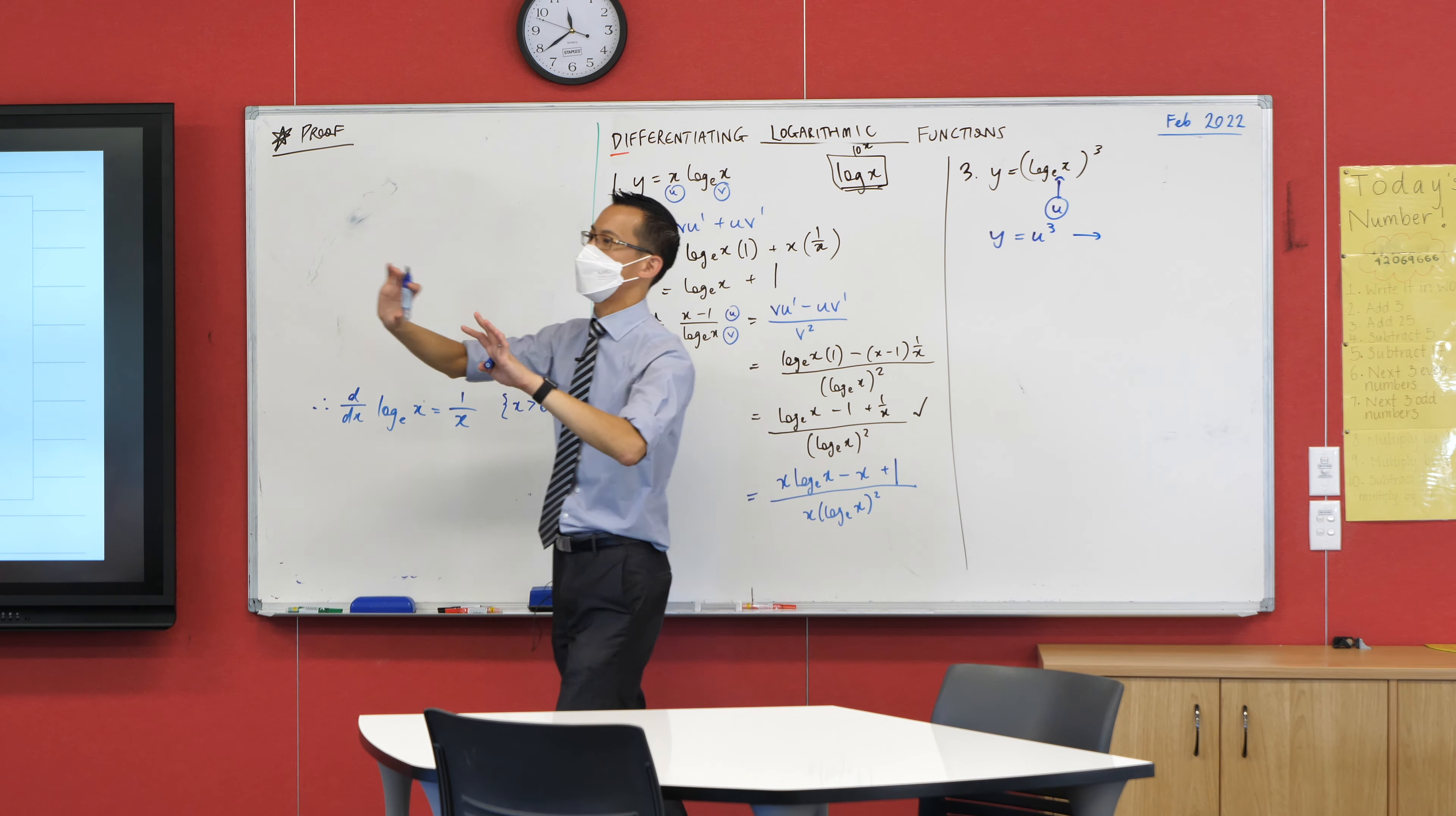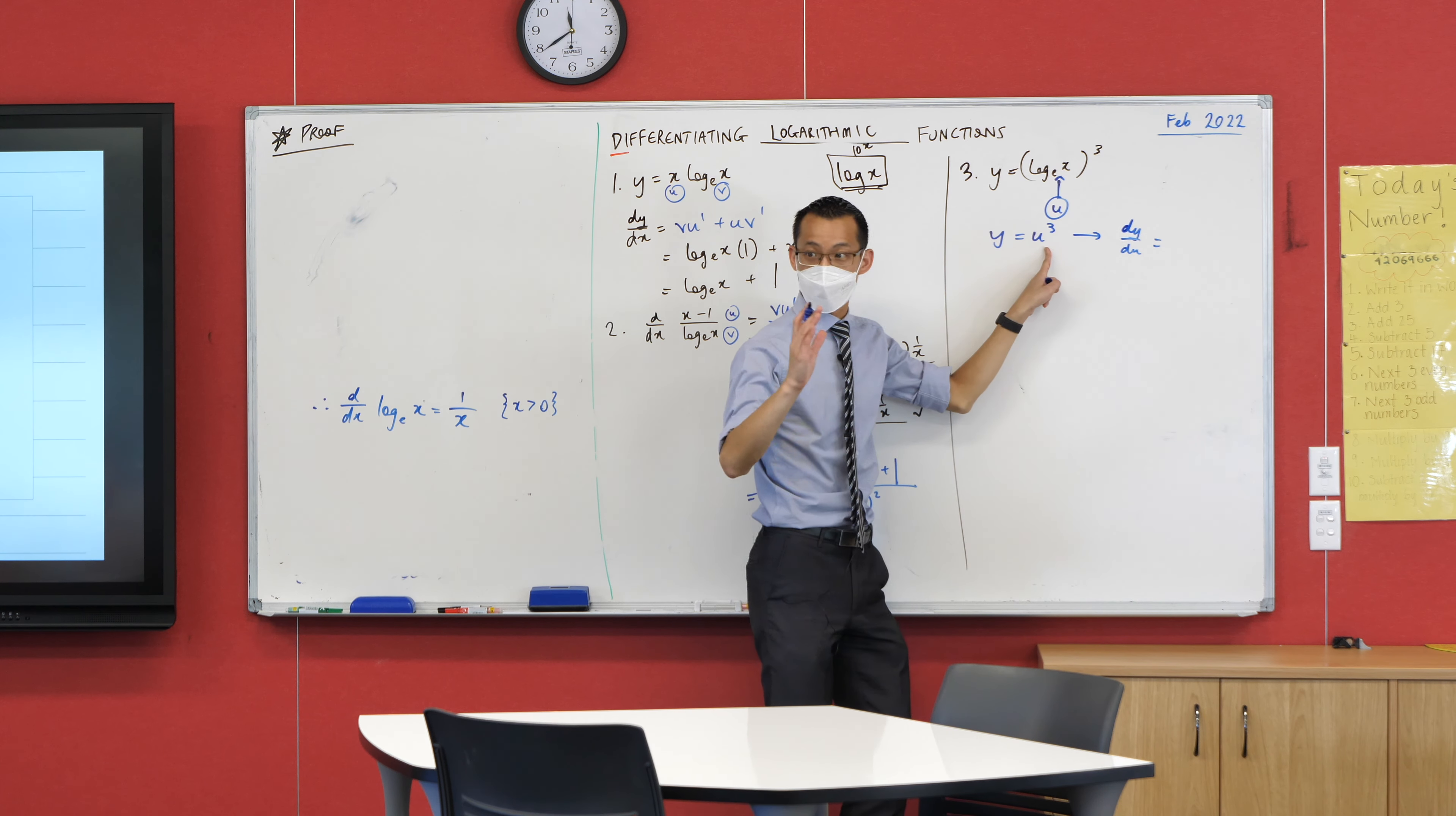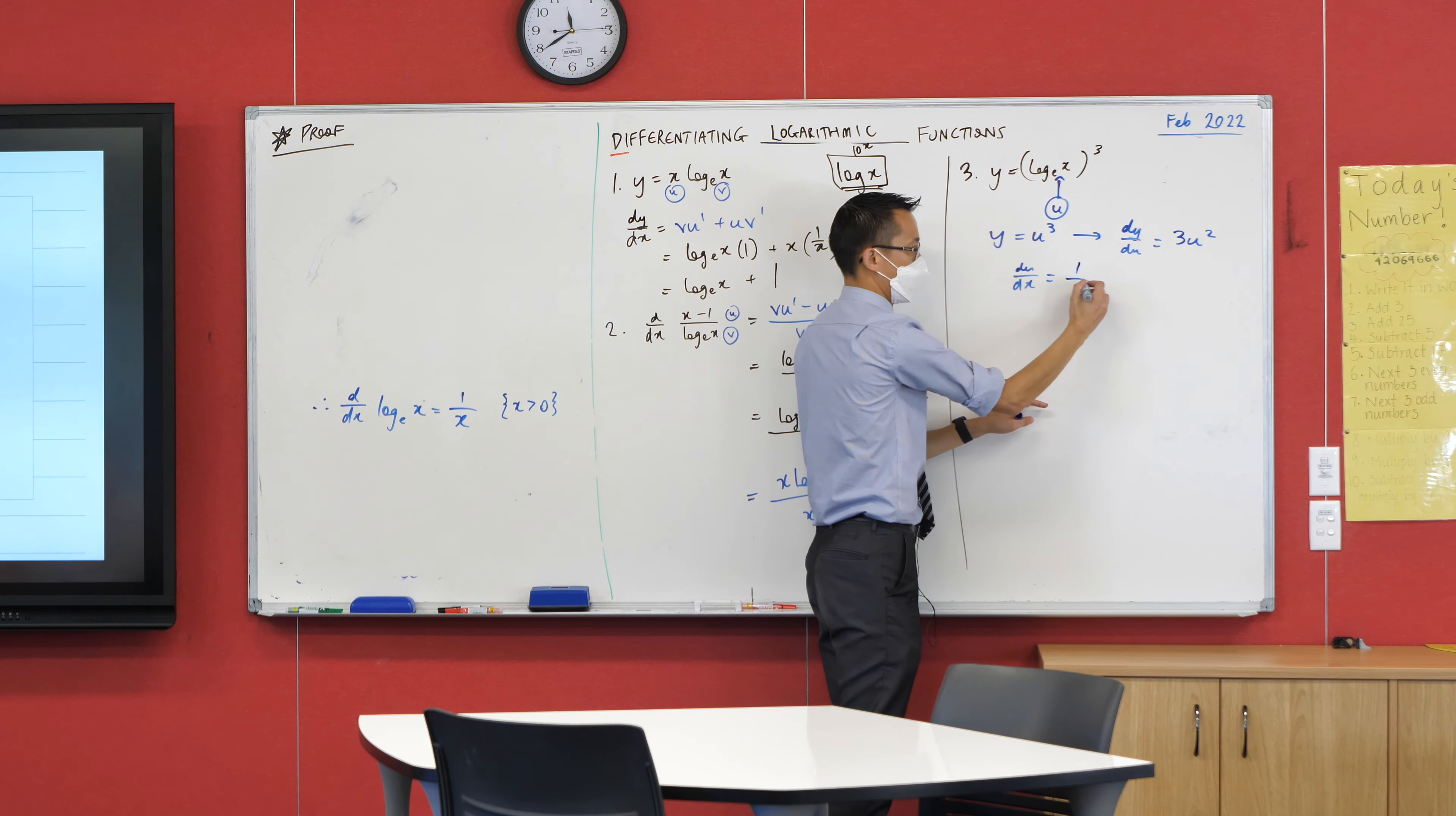And then this lets me work out my two different derivatives, the things that chain together. DY on DU, what happens when something is cubed? It becomes three U squared. And in the same way, I'm going to differentiate this thing, DU on DX. And that's the same familiar log X we've been using this whole time. So it's going to just be equal to one over X.